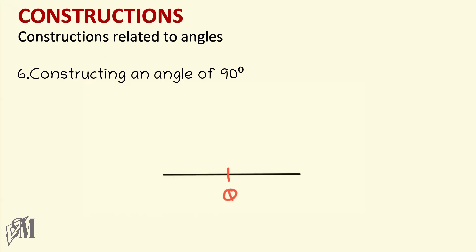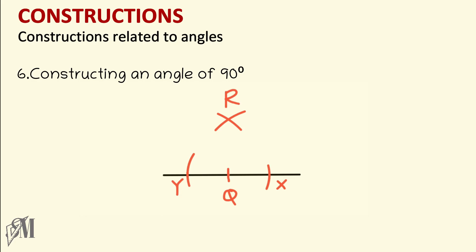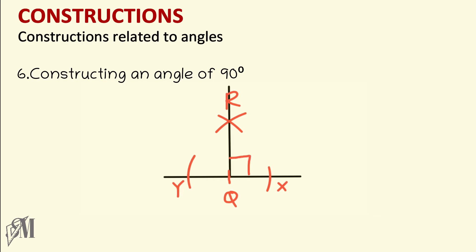The next angle to construct is 90 degrees. Draw any line and mark a point Q on it. Keep the compass on Q and draw two arcs on either side cutting the line, naming them X and Y. Draw two arcs from X and Y without changing the lengths, and name the intersection R. Join Q to R. You now have an angle of 90 degrees.